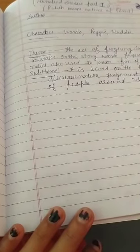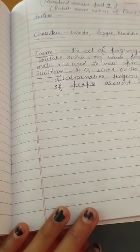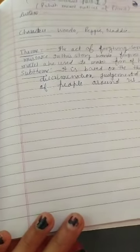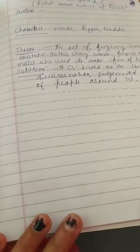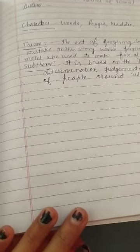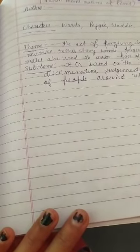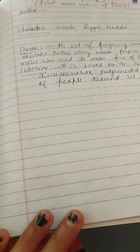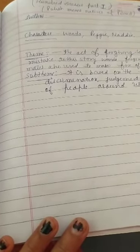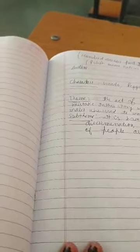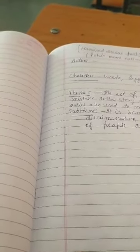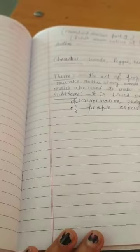Okay dear students, today I'm going to discuss the chapter 'The Hundred Dresses Part 1' with you. This is a story about a Polish girl, Wanda, and her schooling and the discrimination she faced. Here, Polish means the natives of Poland when they immigrated to America.